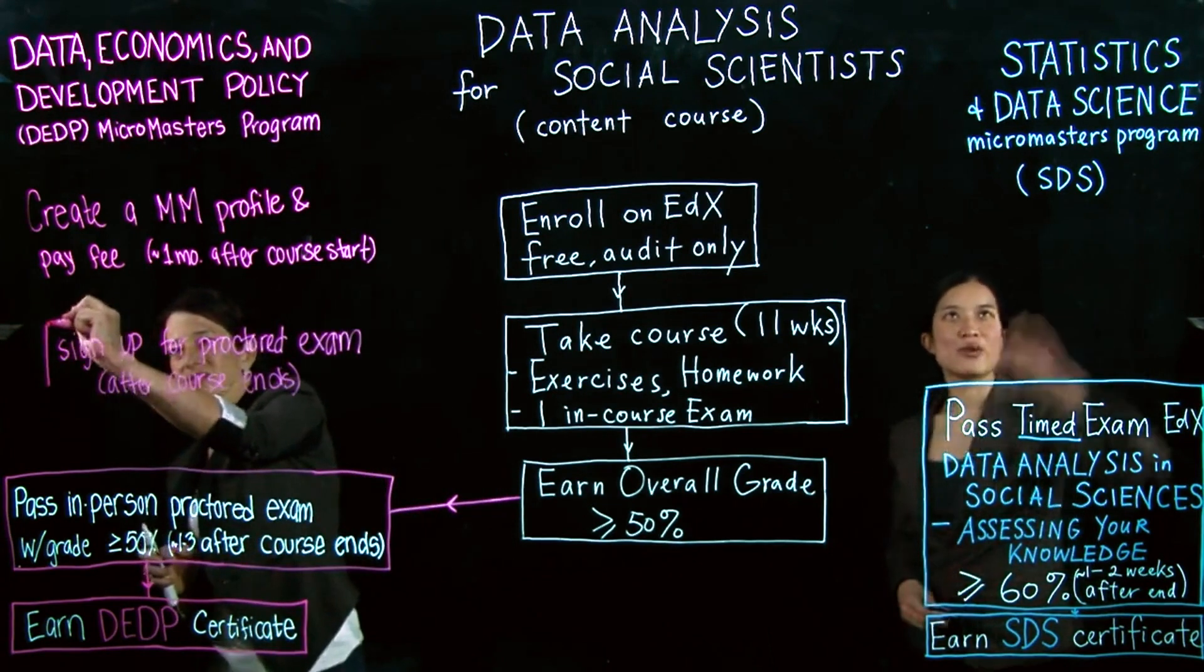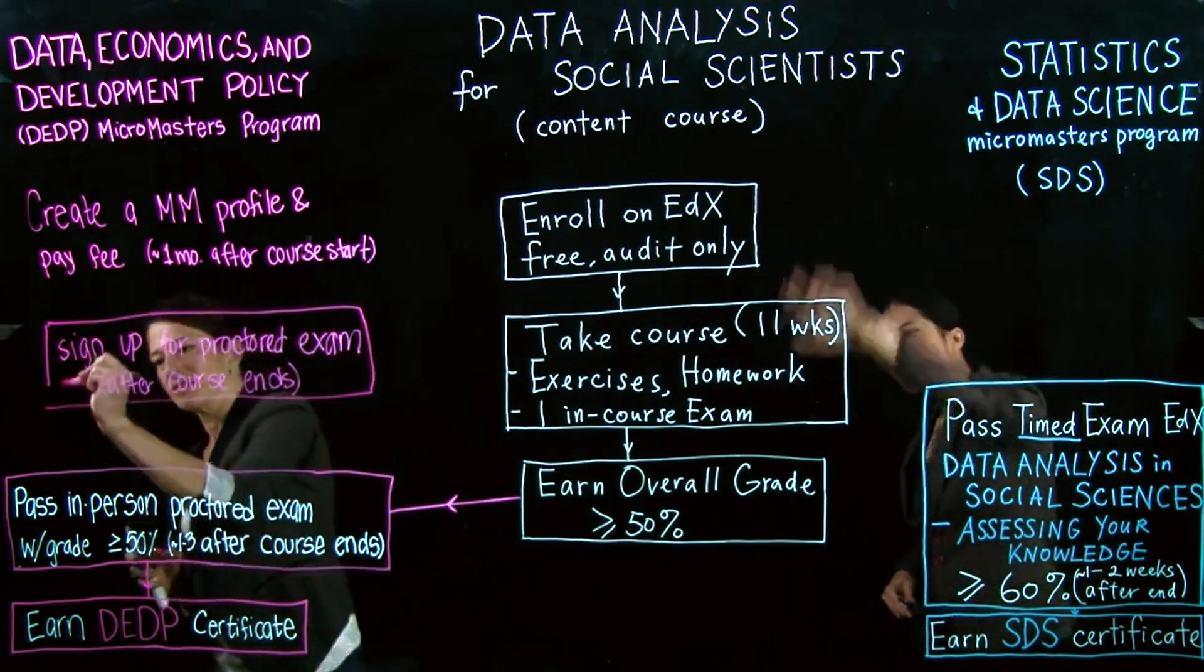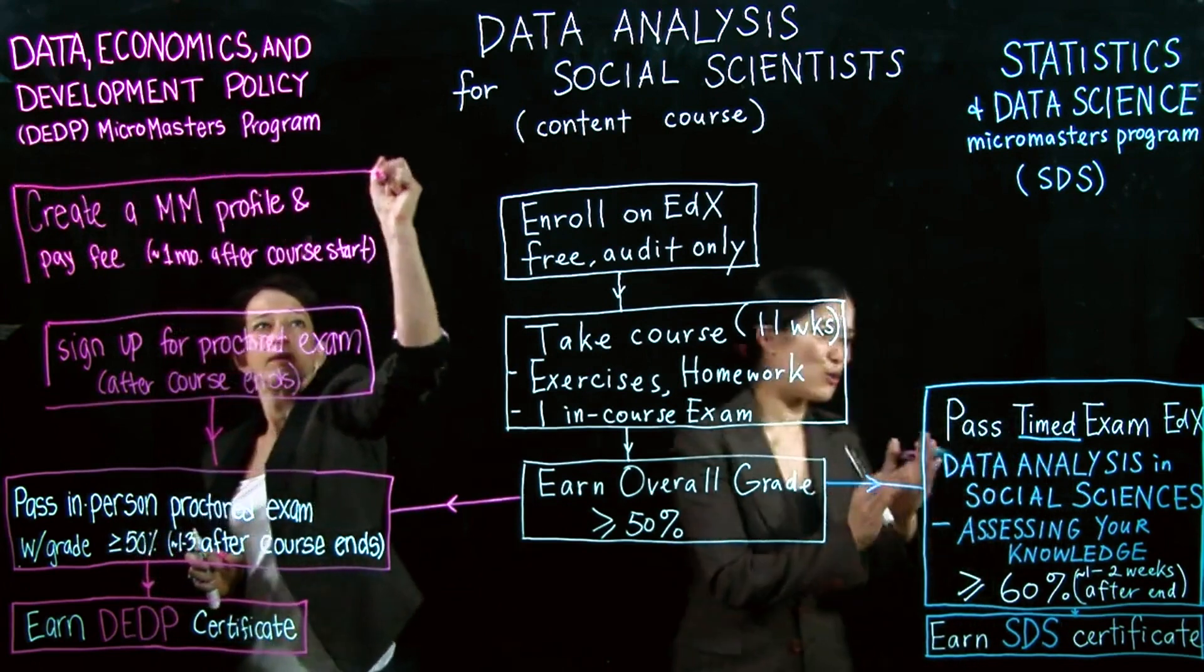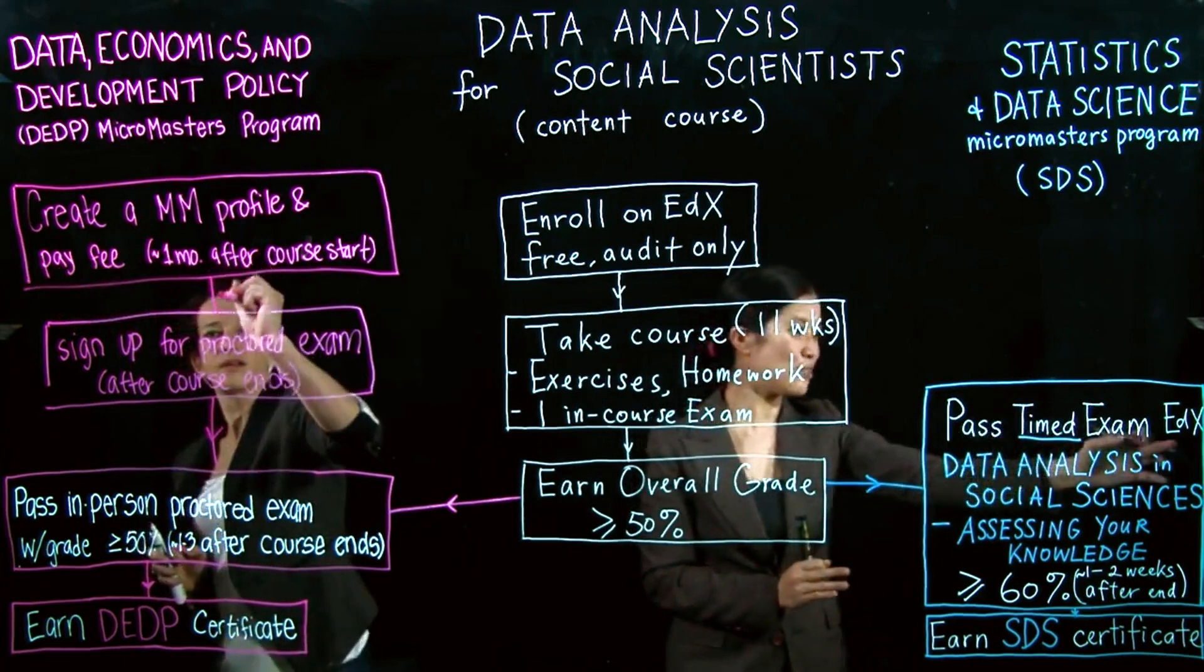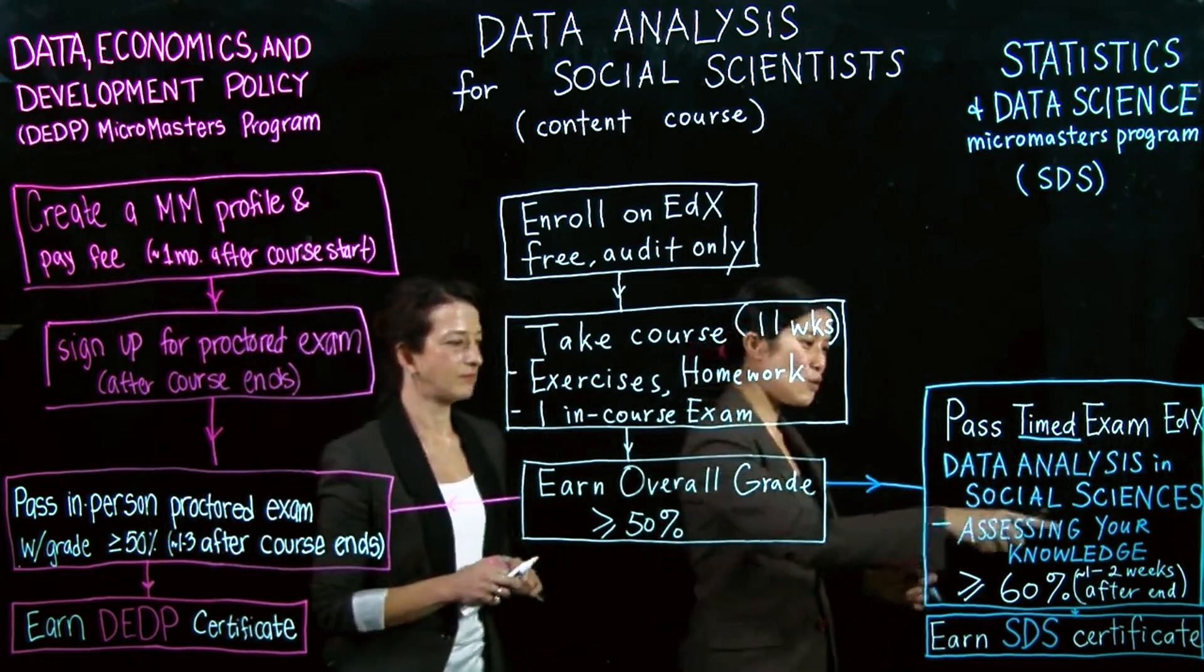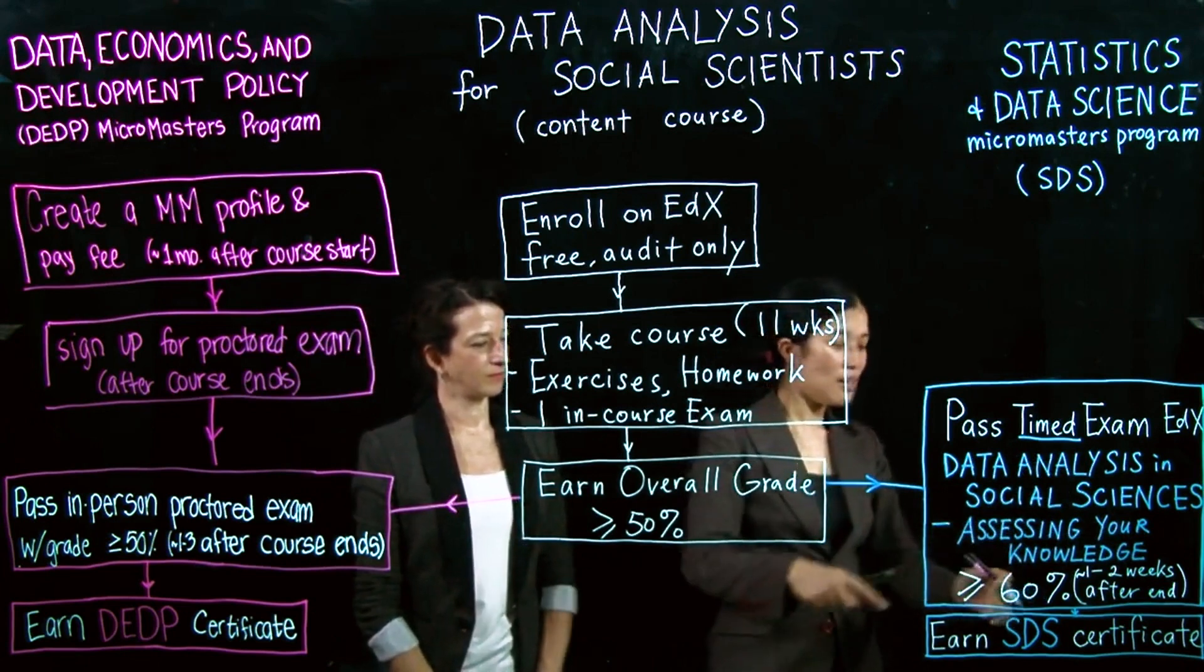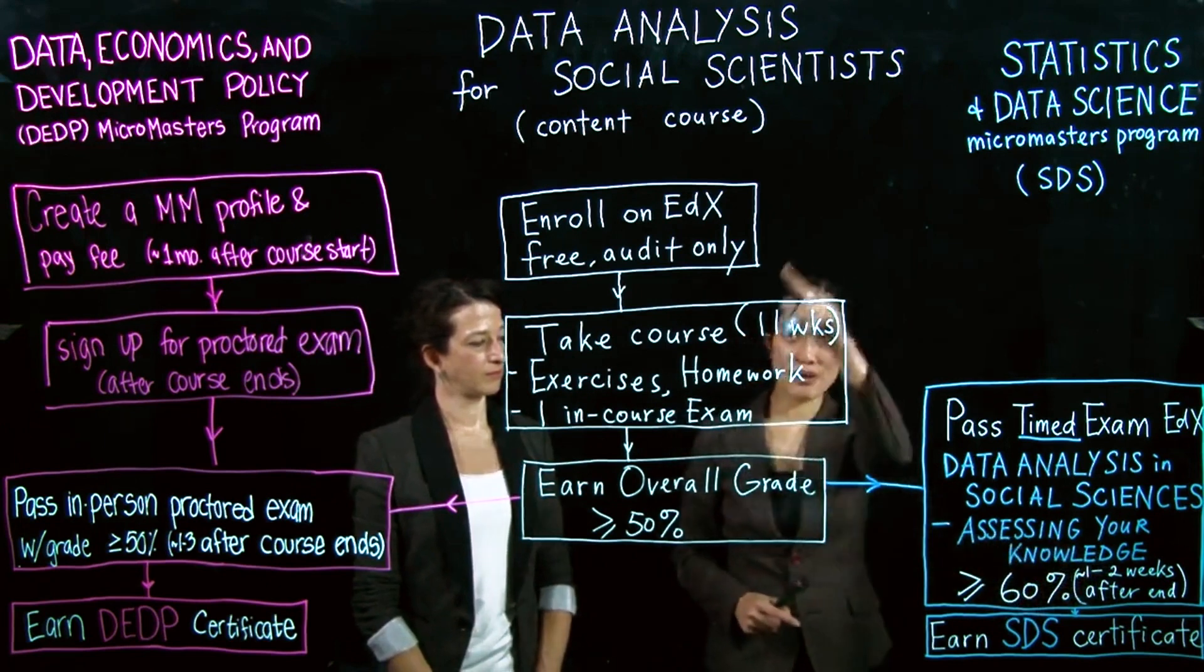If you are interested in pursuing the Data Science and Statistics MicroMasters program, then in addition to passing the content course, the important thing you need to do is to take and pass another exam, which is timed and housed on edX under the course name Data Analysis in Social Sciences, Assessing Your Knowledge. To pass it, you would need more than 60%. This exam typically runs one to two weeks after the content course ends.